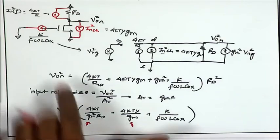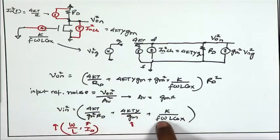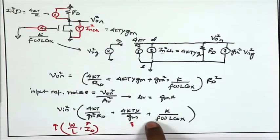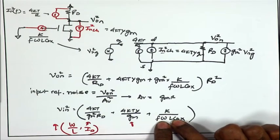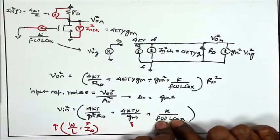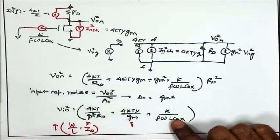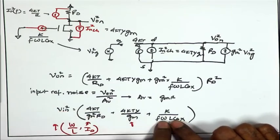Larger W/L or larger I_D will help reduce the first two terms. Also, larger W and L will help reduce the 1/f term, which is significant for low frequency operation. However, choosing larger W and L means more parasitic capacitances — all the capacitances will scale up, making the circuit slower, with lower parasitic poles and reduced bandwidth. So trying to reduce input-referred noise trades off with area and bandwidth.